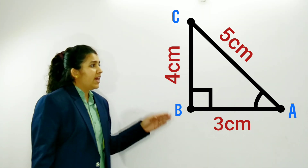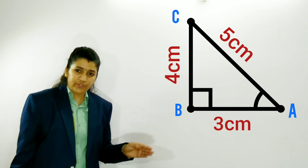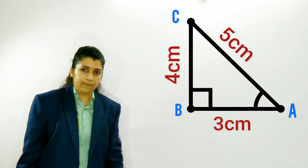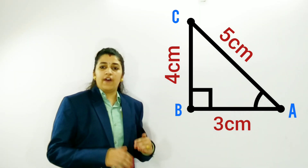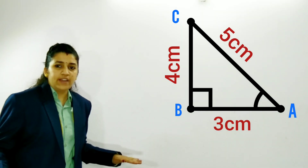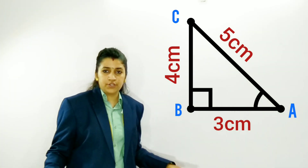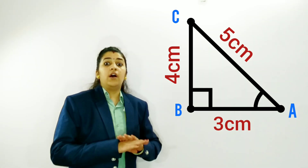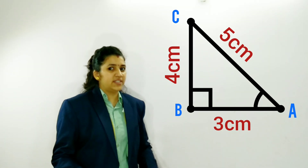So we have covered all 6 ratios. Trigonometry is a wide topic — it has many identities, many solutions, many angles, and many tables. But in today's session, we have covered only these 6 ratios. Hope you like the video.